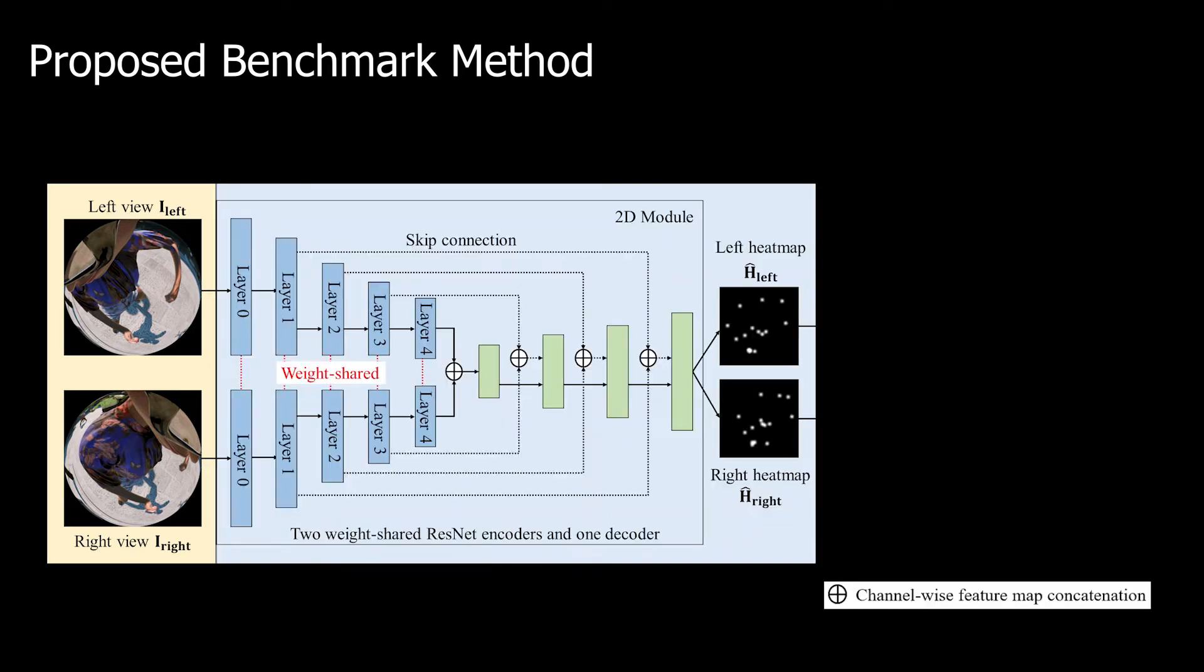We also propose a new benchmark method on UnrealEgo, which achieves state-of-the-art results and outperforms existing methods. We follow a traditional two-step approach in human pose estimation. Firstly, we use stereo egocentric views as inputs. These images are then processed in the 2D module to estimate heat maps of keypoint locations. Here, we use two-weight shared encoders pre-trained on ImageNet and one decoder. The encoders encode the input views into feature maps at each layer. These feature maps are concatenated along the channel dimensions at each layer and forwarded into corresponding decoder layers to output heat maps.